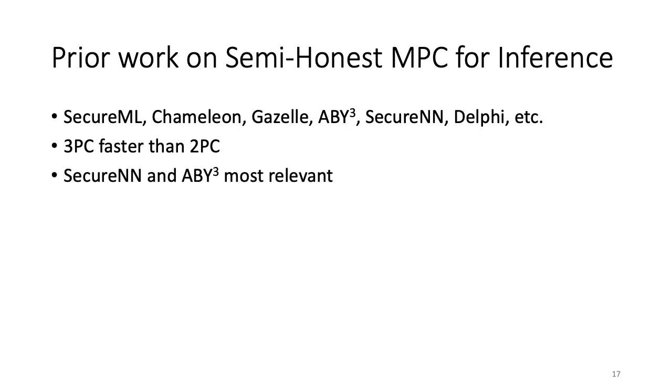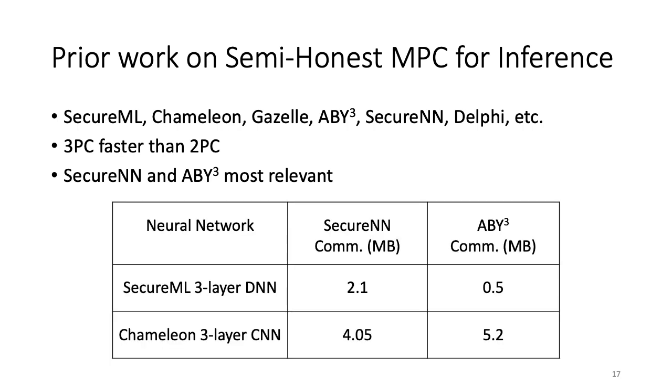Among the prior works, the most relevant 3PC protocols for us are SecureNN and ABY3, primarily because of their good efficiency for ML tasks. Here are some numbers comparing the communication required for SecureNN and ABY3 for two neural network benchmarks. The first network is from the SecureML paper and consists of three fully connected layers, while the other network is from the Chameleon paper which has one convolution layer followed by two fully connected layers. You can see in the table that ABY3 performs better for the SecureML DNN, whereas SecureNN wins for the Chameleon network. In fact, for general networks, there is no clear winner between these two protocols and their relative performance is largely governed by the exact structure of the neural network. Of these two, we chose SecureNN and improve its efficiency, keeping secure inference in mind.